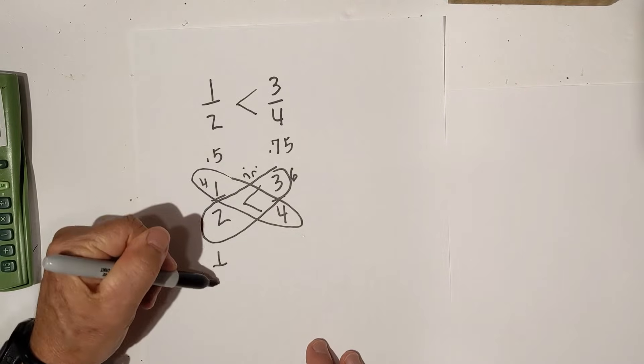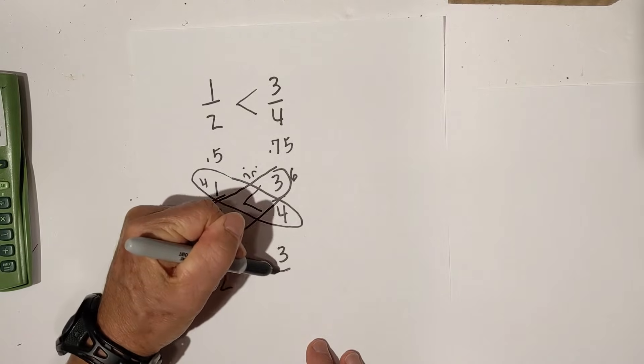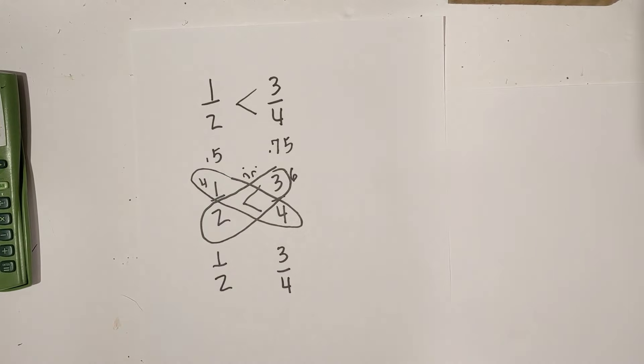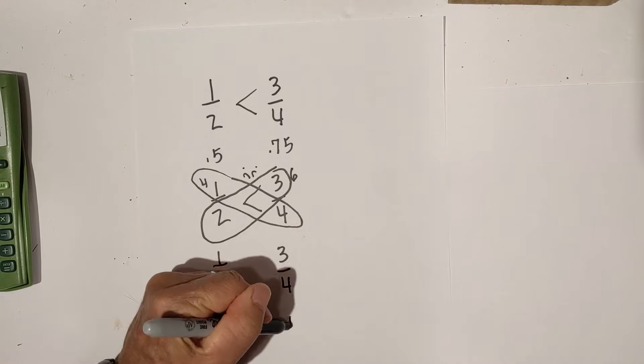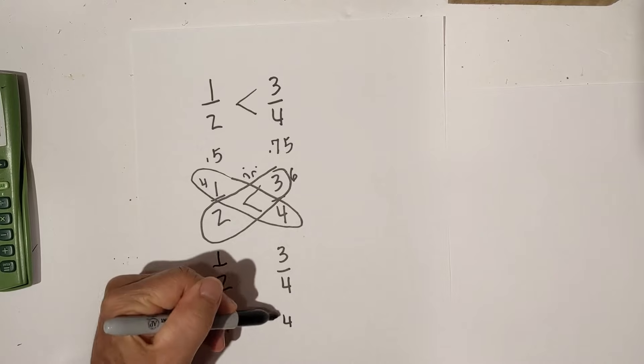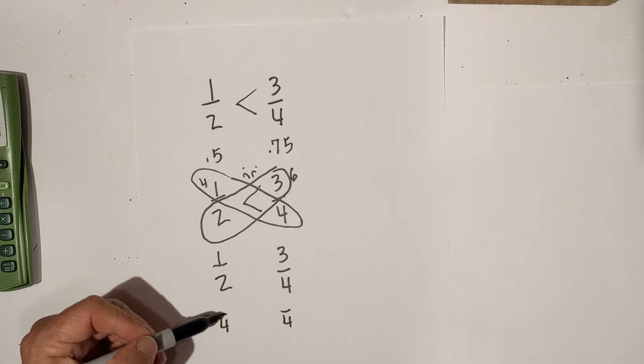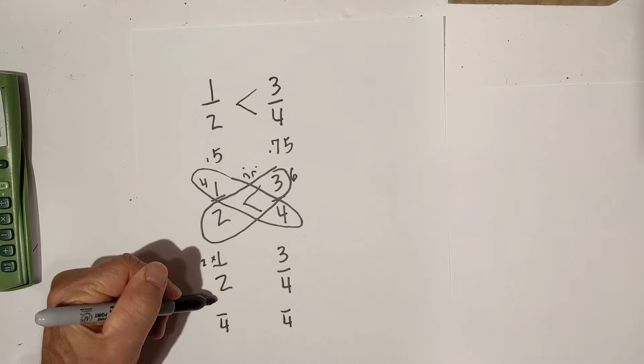And the last one, if you don't like any of those ways, you can find a common denominator. I know the common denominator of 1 half and 3 fourths is 4. So, 2 goes into 4, 2 times, 1 times 2 is 2.